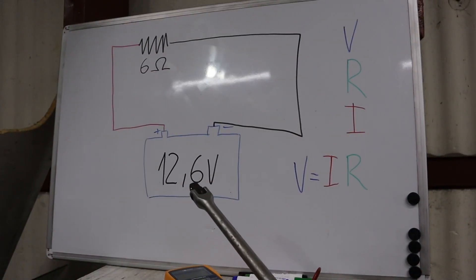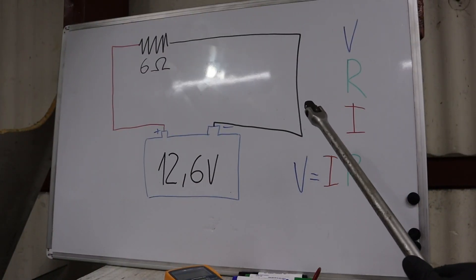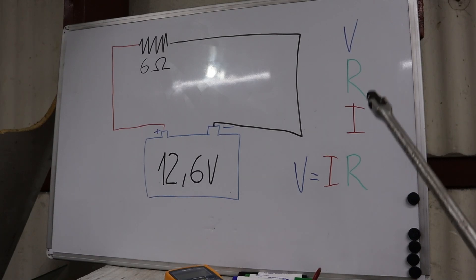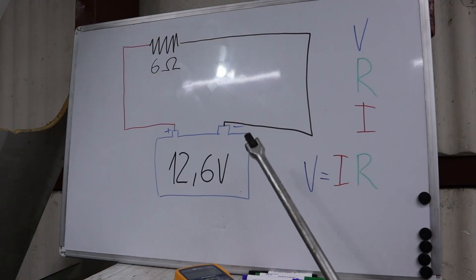In every automotive electrical circuit, there are three things you need to consider: voltage, resistance, and amperage or current. Let's start with a little theory.